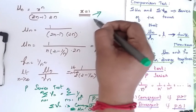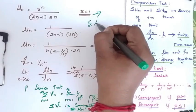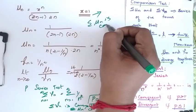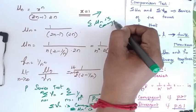So for x equal to 1, summation un is convergent. Thank you.